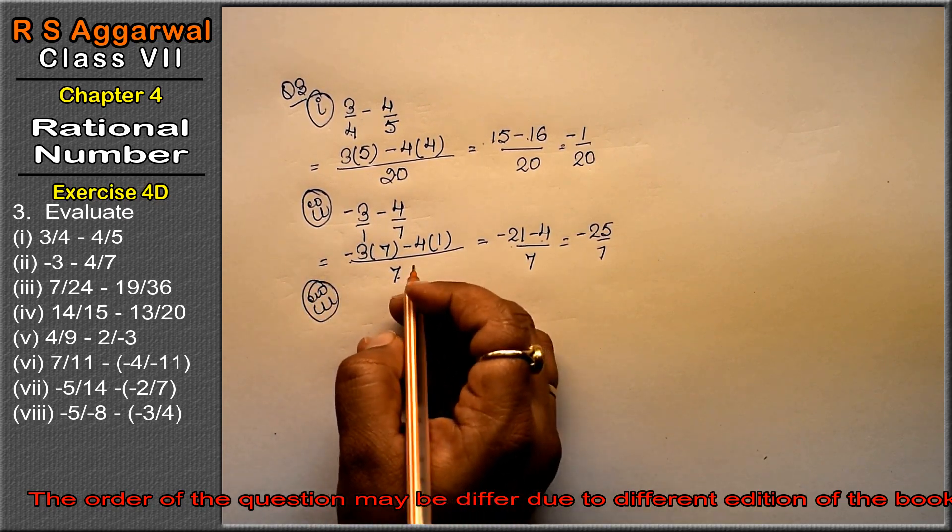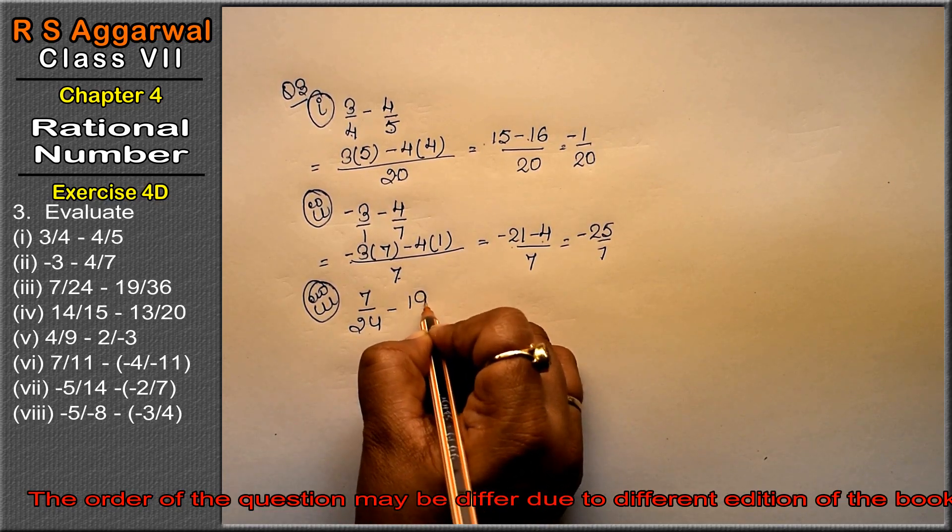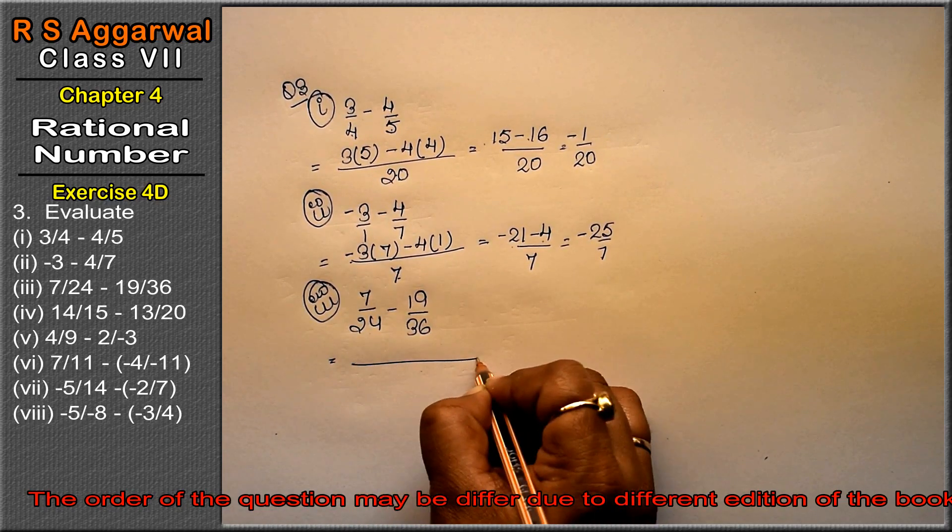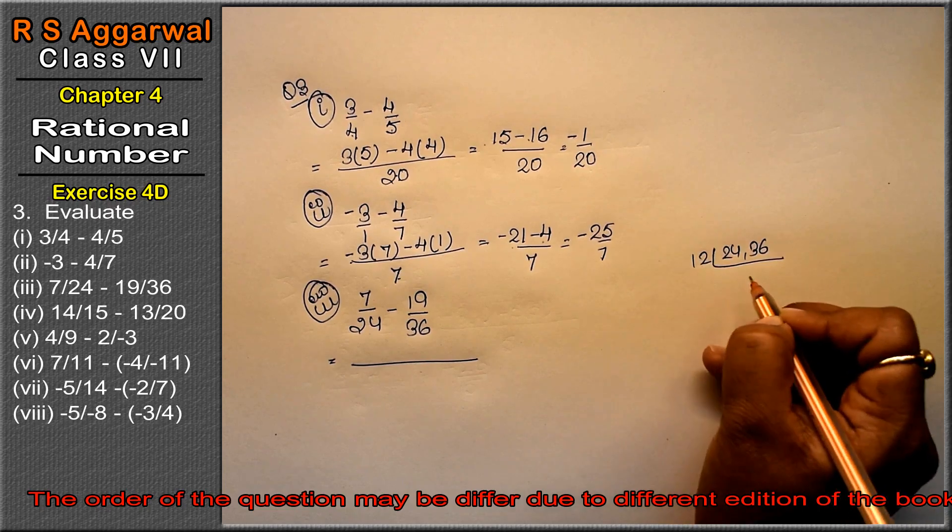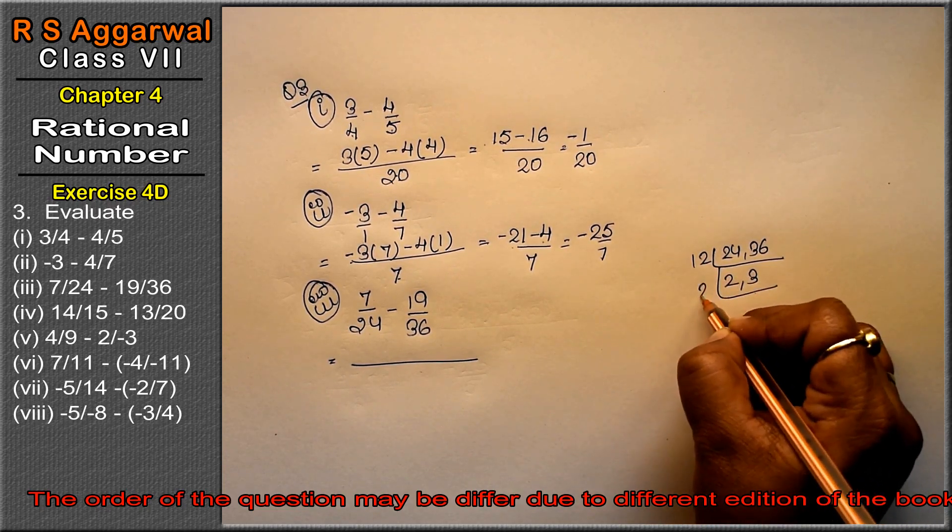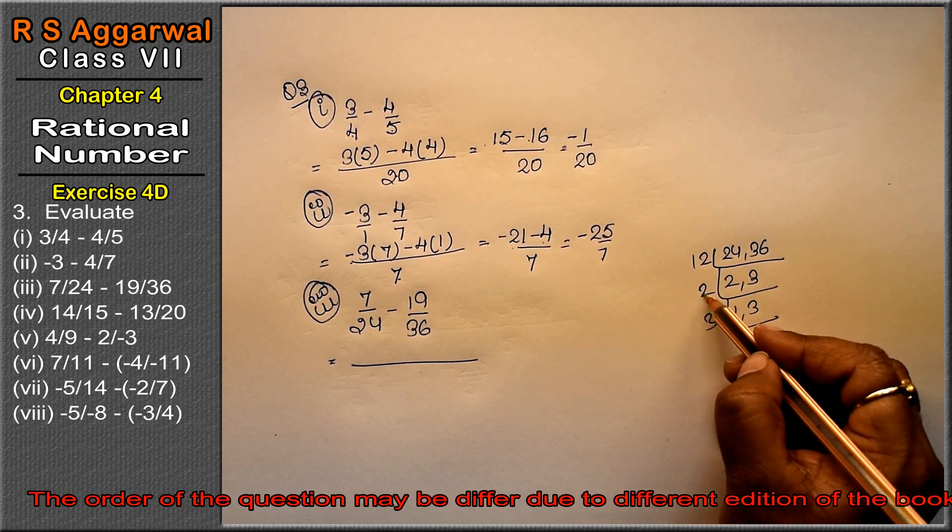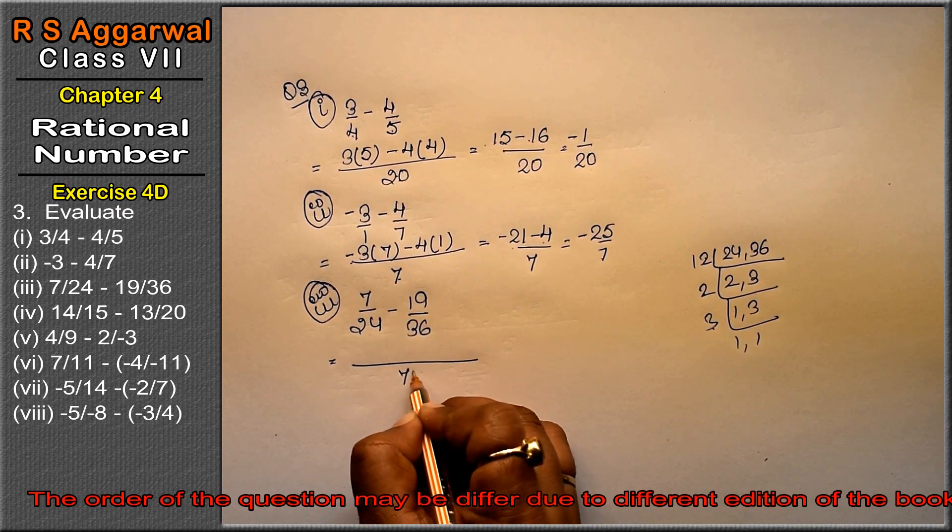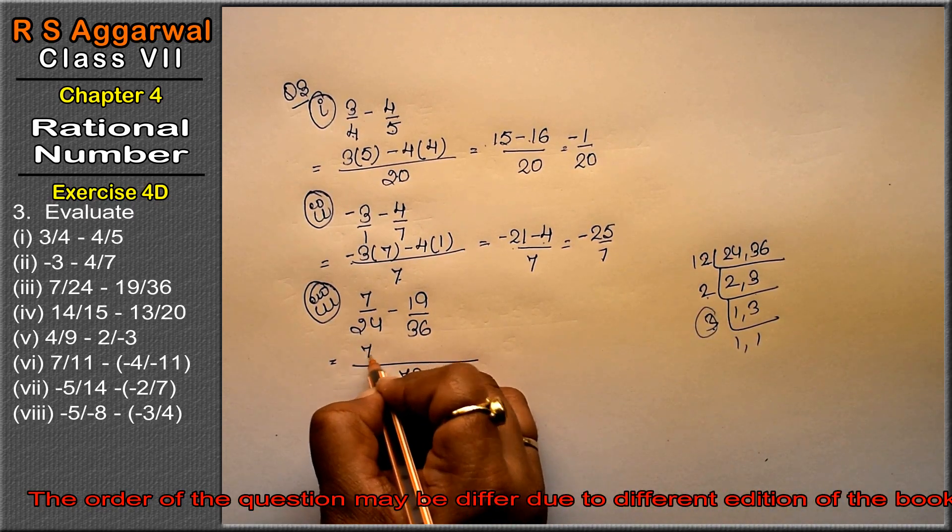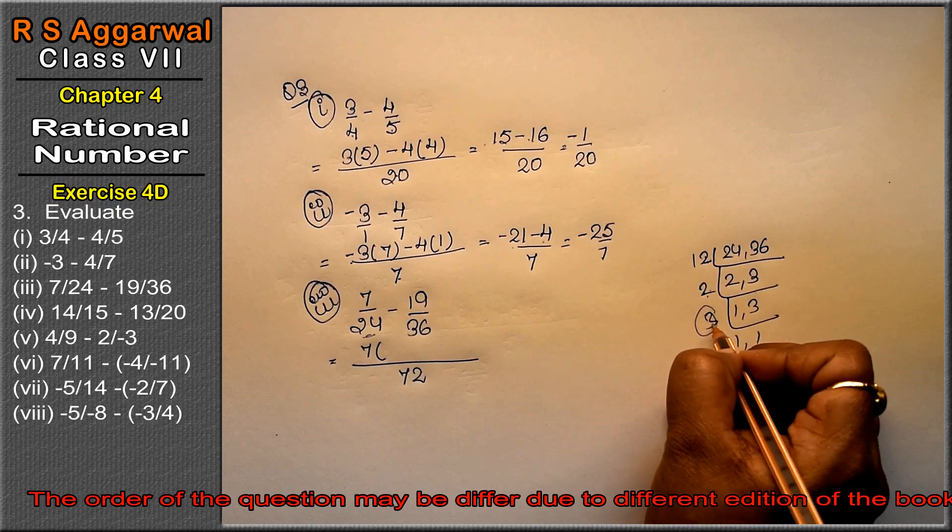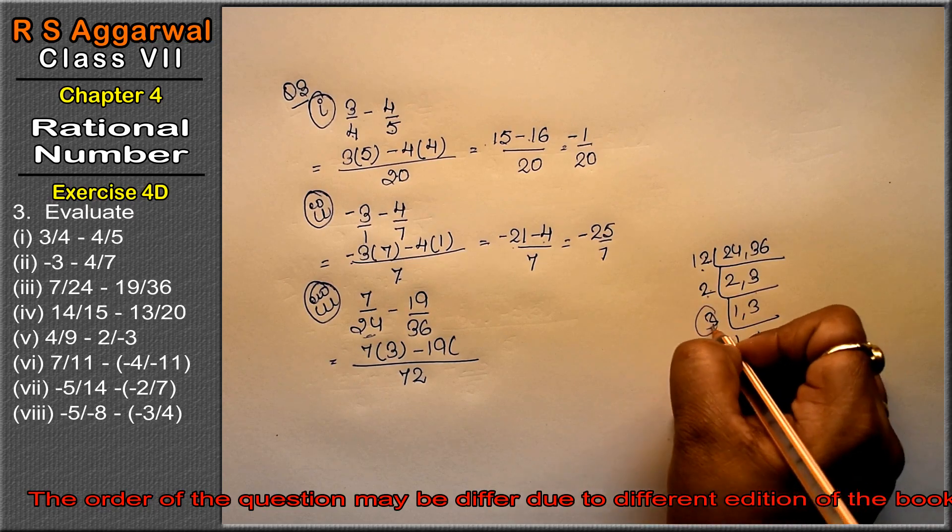Third part is 7 upon 24 minus negative 19 upon 36. Let's find LCM of 24 and 36. 24 is 12 times 2, and 36 is 12 times 3. So the LCM is 12 times 6 which is 72. Now 24 goes into 72 three times, so 7 becomes 21. And 36 goes into 72 two times, so 19 stays as is.